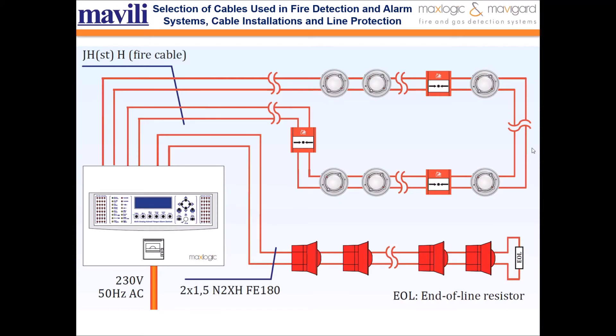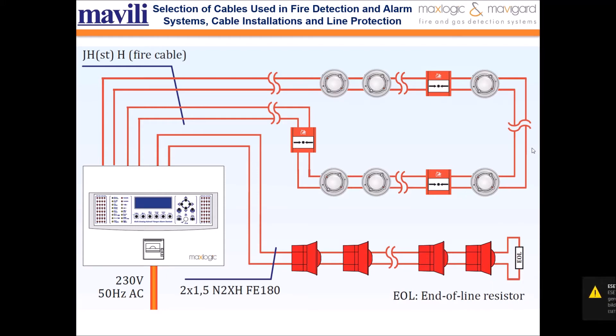The cable which is connected to the sounder beacon, like output devices, must be fire resistant. But the cable which is connected to the detector and manual call point, like input devices, might be either. According to standards, the cable resistance against fire must be minimum 30 minutes.